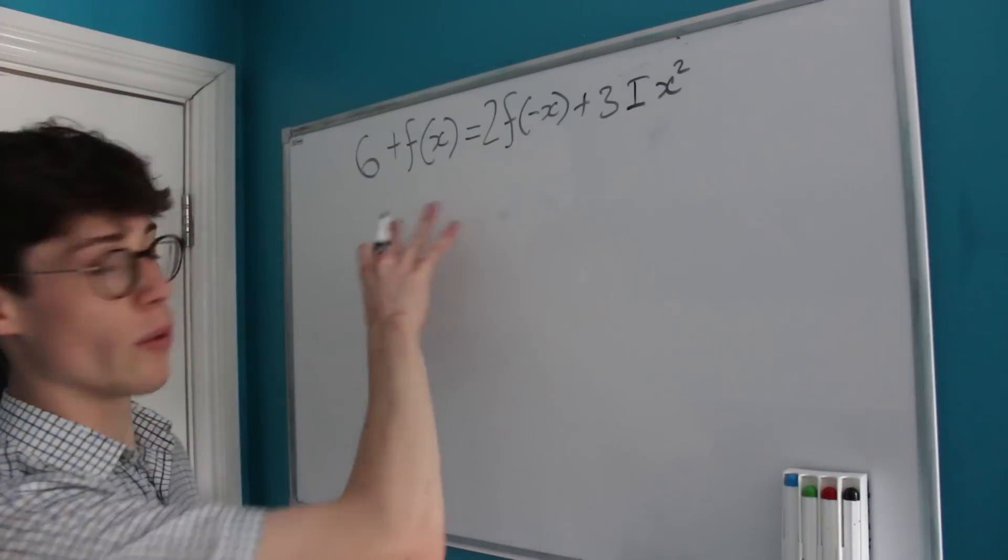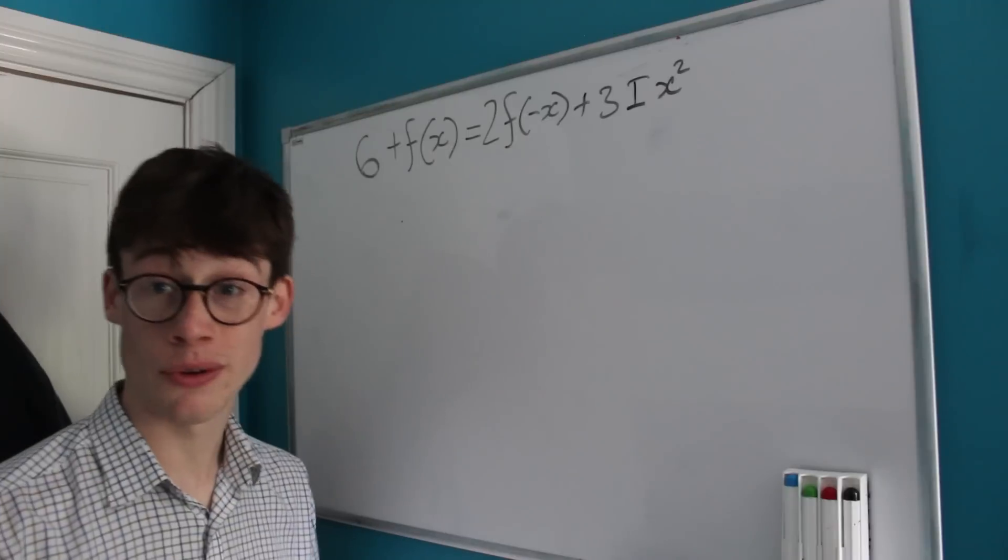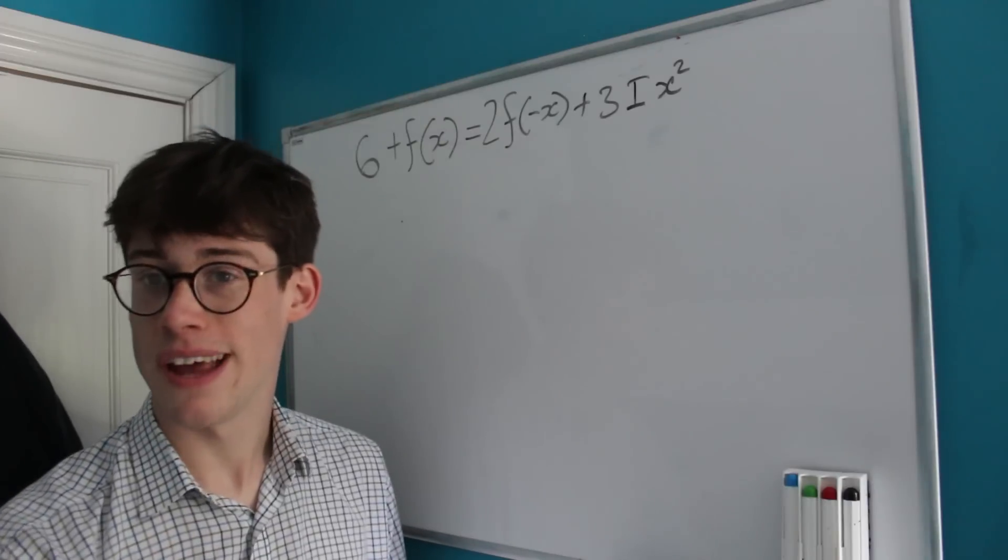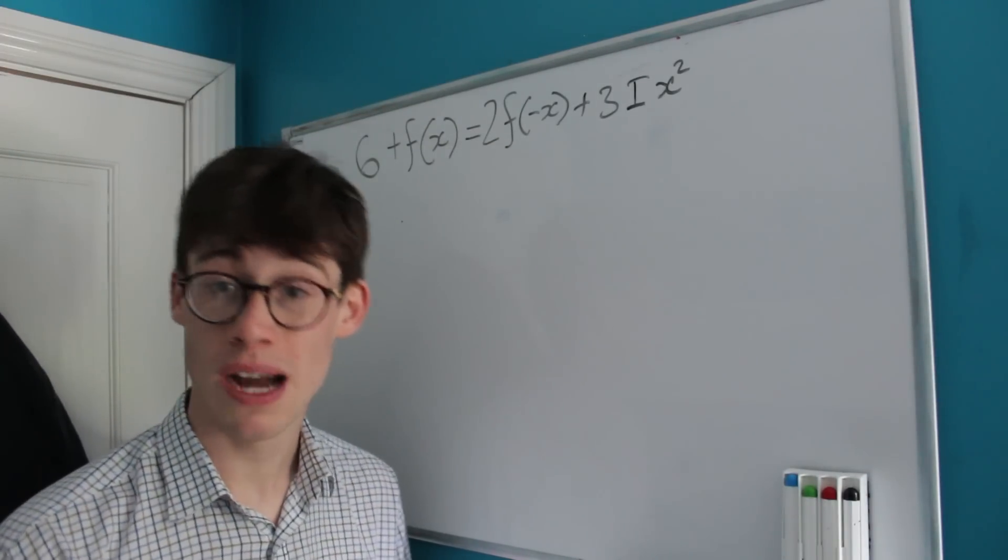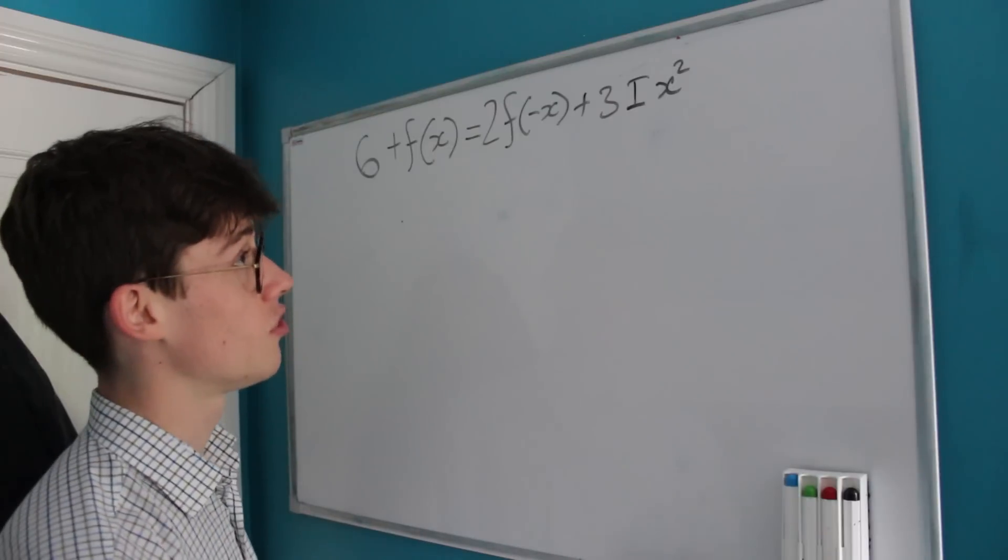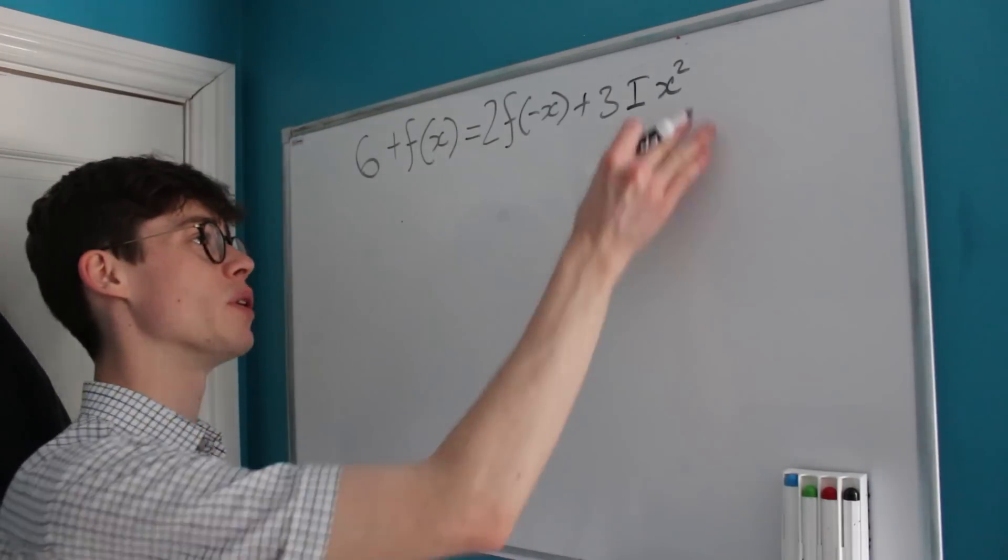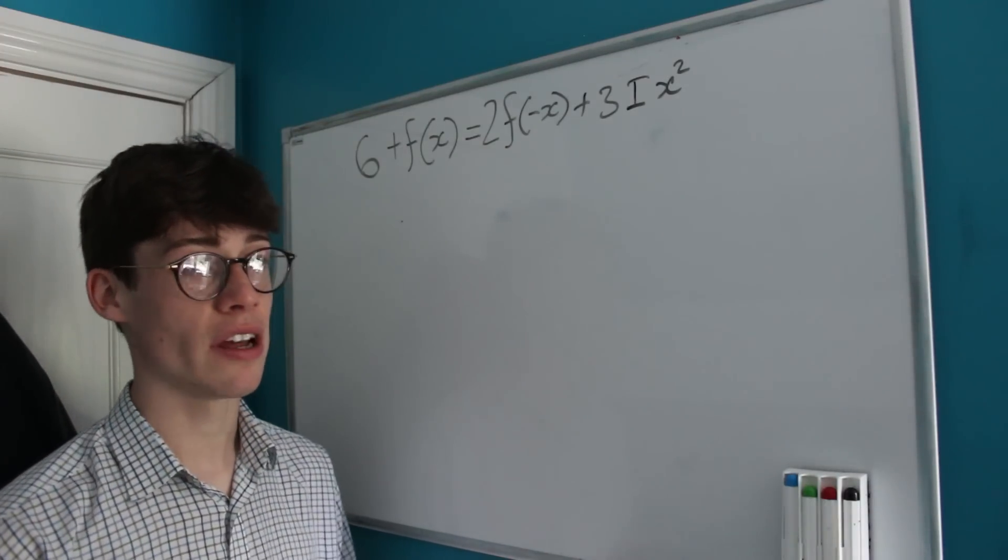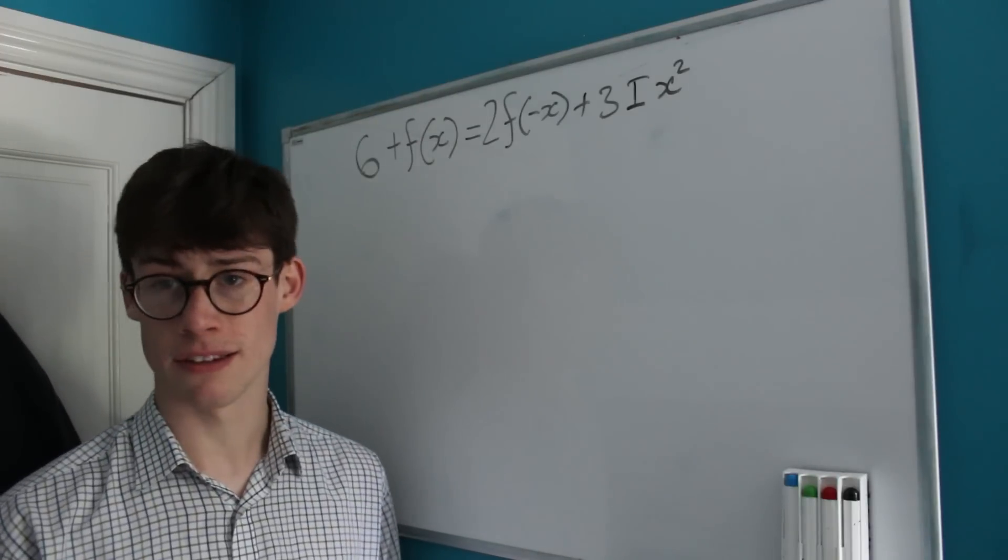Looking at our equation, we might be thinking what's our next step going to be. Some of you who have done quite a lot of calculus might have spotted what I spotted, which is that we've got 3x² here. What does that remind us of? It reminds us of something that's been differentiated by power rule, because it's got a coefficient that's one greater than its power. Given that we're looking for the value of an integral and we've got a term here that looks like it's been differentiated, it seems like a sensible thing to integrate on both sides of our equation.